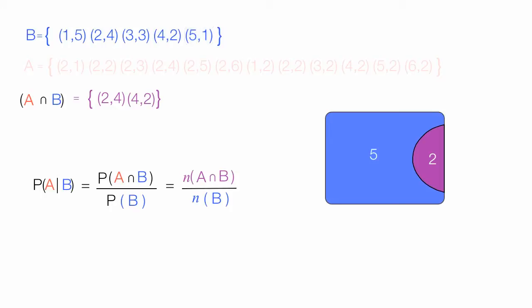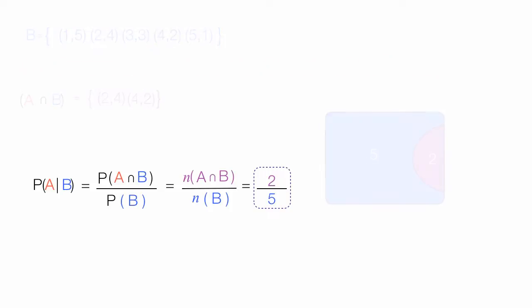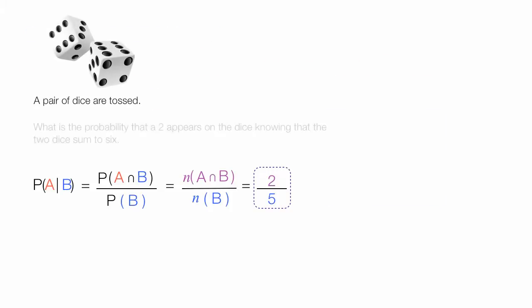Now I can answer my question. And that is simply 2, the number in the intersection, divided by the number in B. And this is my answer. Two out of five times, or about 40%. To answer the question, what is the probability that a 2 appears on the dice knowing that the two dice sum to six? It's two out of five, or about 40%.